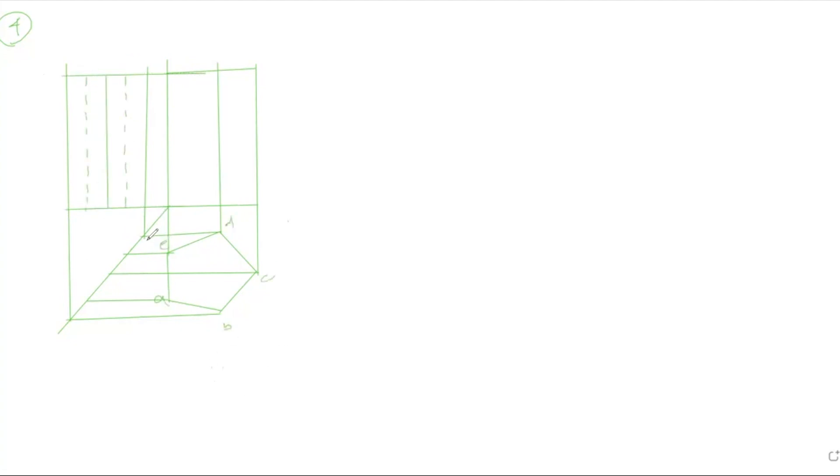It is same like yesterday's sum. I've done naming A, B, C, D, E, and the cutting plane is like this which is inclined at 45 degrees. Now how many points are we getting in top view? Two points.